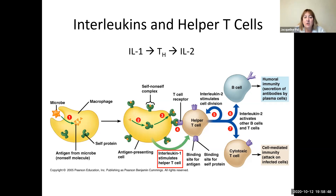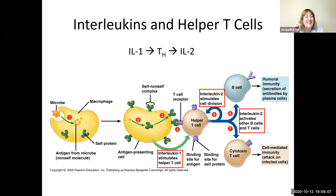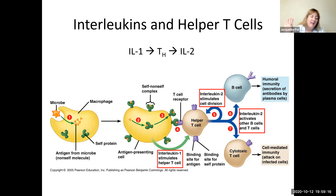So to summarize: interleukin-1 from the APC stimulates the helper T cell. When the helper T cell gets activated, interleukin-2 from the helper T cell stimulates helper T cell division, as well as activating B cells and cytotoxic T cells. It's impossible to have T cell immunity by itself, because when that helper T cell gets turned on and releases interleukin-2, that automatically gets the B cells involved.